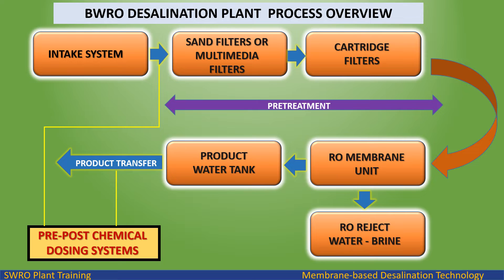A BWRO Desalination Plant is basically composed of the following systems: Intake System, Intake Pump, Multimedia Filter, Cartridge Filter, RO Membrane Unit, Product Water Tank, and RO Reject Water (Brine).